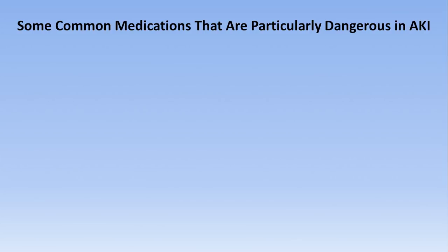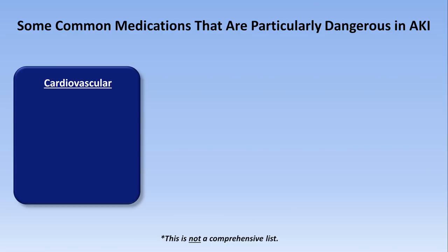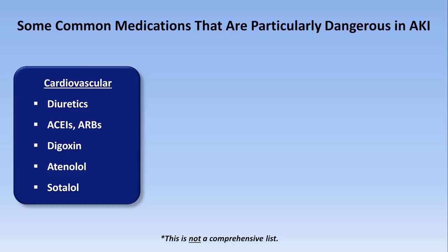There are many medications that need to be dose-adjusted or discontinued in AKI, but some come up more frequently due to being commonly prescribed, having a narrow therapeutic window, or a dangerous side effect profile. Particularly dangerous cardiovascular medications include diuretics, ACE inhibitors, and ARBs, because they can all further worsen renal function in AKI. Digoxin, atenolol, and sotalol are all renally excreted and can cause life-threatening arrhythmias at supratherapeutic doses.